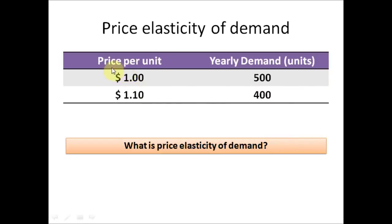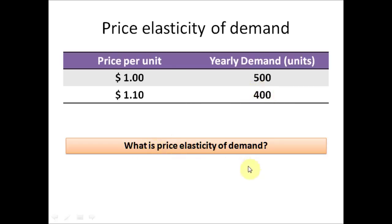So we have this company that sells its goods at $1 per unit and the yearly demand for that product is 500 units. The company has forecasted that if they increase the price by 10 cents and sell the goods at $1.10, the yearly demand will fall by 100 units and come down to 400 units. We need to find out the price elasticity of demand.